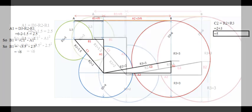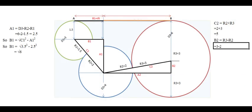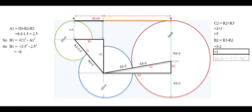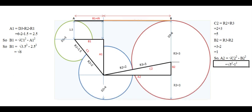Now, let us find out the value of B2. Value of B2 will be equal to radius of red circle minus radius of blue circle. This will come to 3 minus 2 which is equal to 1. The value of A2 will be equal to square root of C2 square minus B2 square, which will be equal to square root of 24. This can be simplified as square root of 6 into 4, which can also be written as 2 into square root of 6.